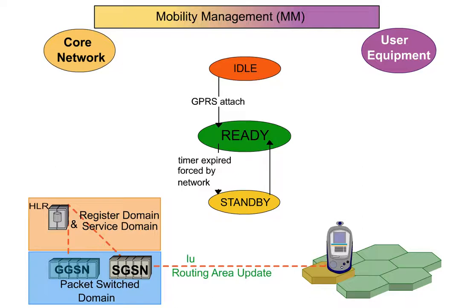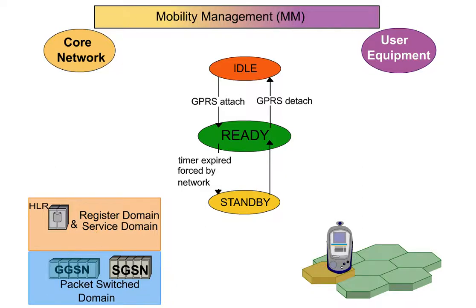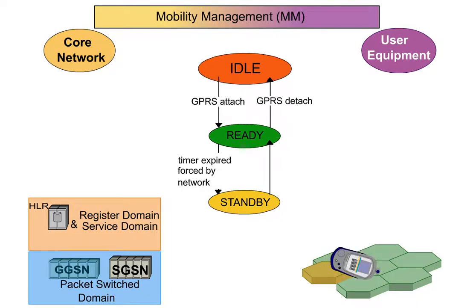Logging a user equipment off the network is called GPRS detach. After that, the user equipment returns to the idle state. In other words, it is no longer attached to the GPRS network.